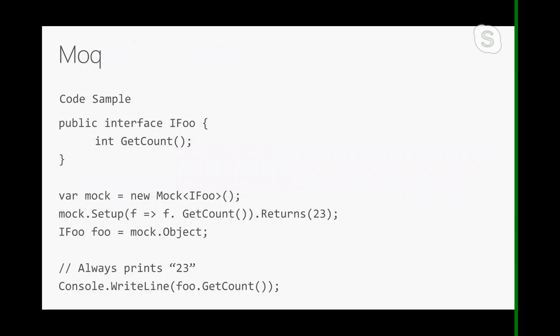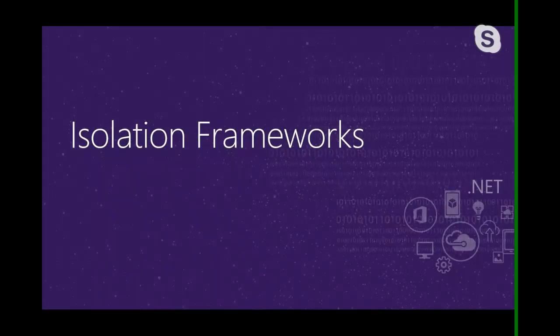You'd mock an IDbClient because you don't want your unit tests making changes to the database. The setup for the mock is quite straightforward — you can tell it to always return the number 23. Calling .Object lets you access the concrete object generated behind the scenes, because Moq does runtime code generation to achieve this. So anytime you call foo.GetCount it always returns 23, because that's the mock behavior defined.